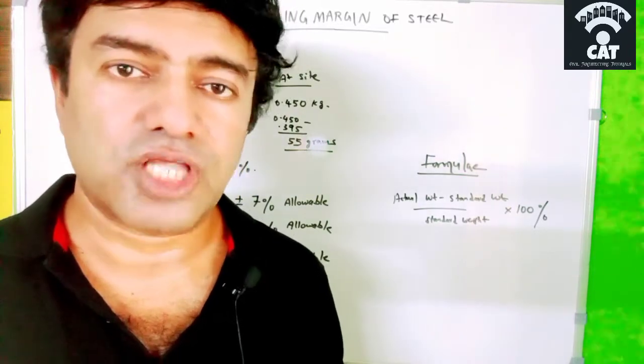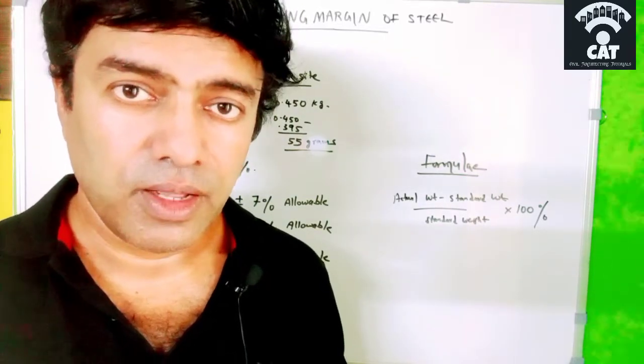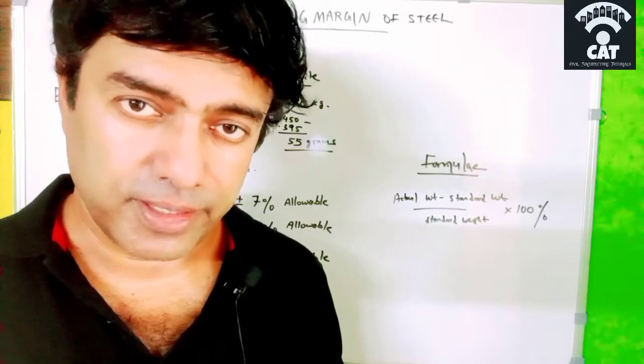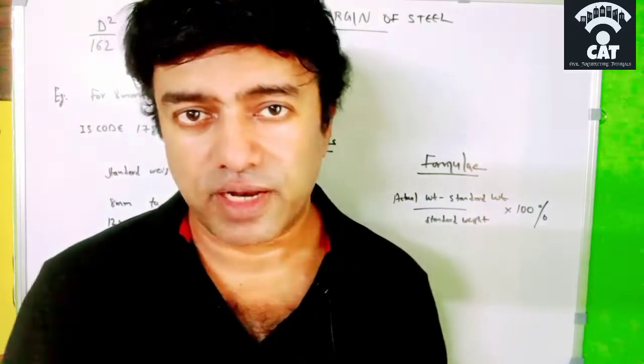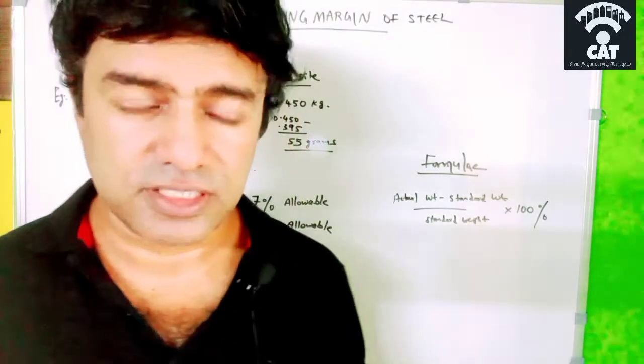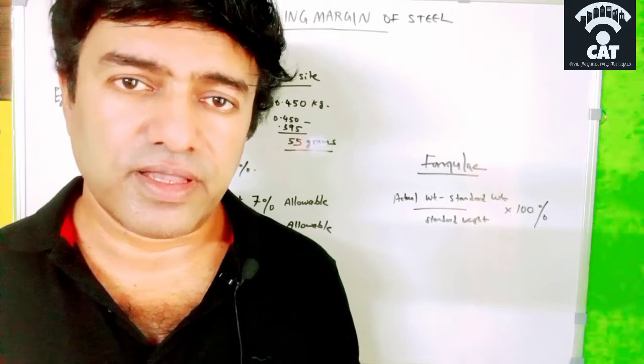For example, if you take an 8mm bar, it should come to 0.395 kilogram, or 395 grams, for one meter of 8mm steel bar. That is the standard weight of that 8mm steel bar per one meter. But this usually never happens exactly at site — it can vary.